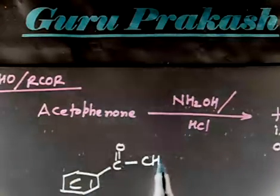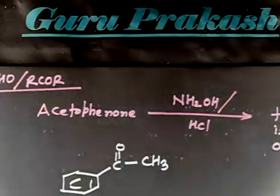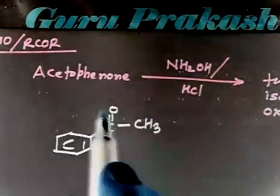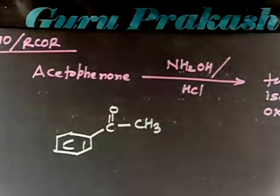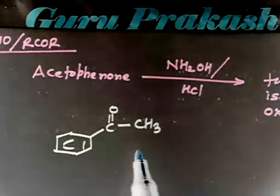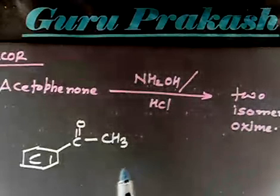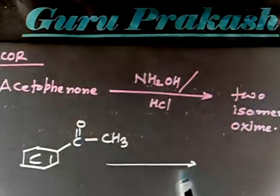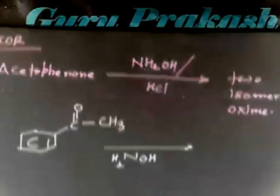This molecule is called acetophenone because one side you have the acetyl group and the other side you have the phenyl group. The whole molecule is called acetophenone. Now, if you react this with NH2OH, you have to have a double bond form.